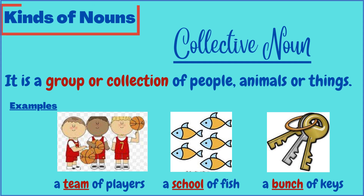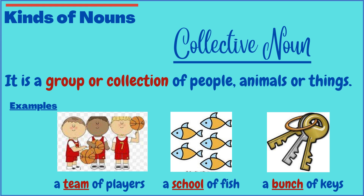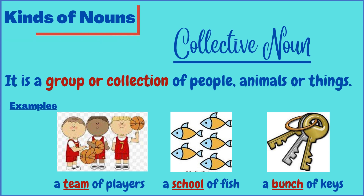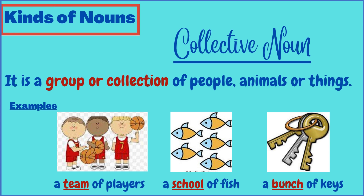The next kind we are going to discuss is the collective noun. This is an interesting one, as many collective nouns are quite fascinating — such as 'a school of fish,' 'an embarrassment of pandas,' etc. A group or collection of people, animals, or things is referred to as a collective noun. Examples: 'a team of players,' where 'team' is the collective noun; 'a school of fish,' where 'school' is the collective noun; and 'a bunch of keys,' where 'bunch' is the collective noun.